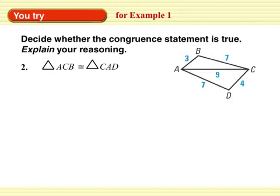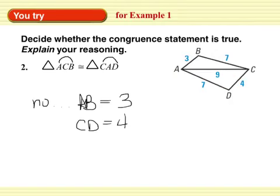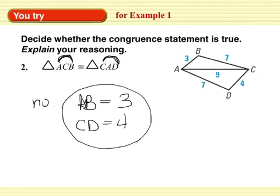Okay, you try again. Push pause. For this one, the answer is no because all the corresponding sides aren't congruent to the other corresponding sides. In particular, AB isn't congruent to CD. And if you see, AB are the first and last, CD are the first and last. Those need to be congruent and they're not.